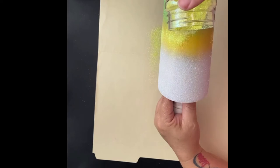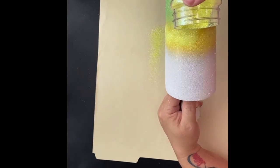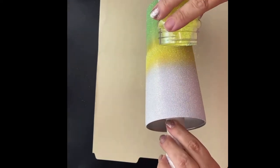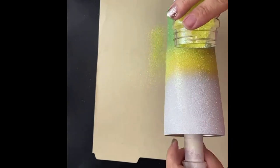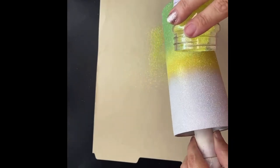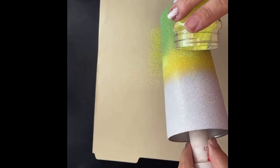One, it allows the glitter to fall down into some of those empty spaces where the colors meet. And two, it allows it to get full coverage in the middle of the tumbler. So I just go slow, tapping lightly.